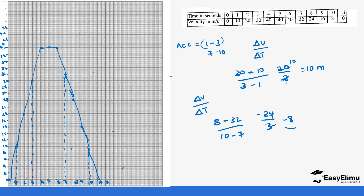The reason we get a negative value is that the velocity is decreasing gradually from forty meters per second downward from minute four onwards. From minute seven it continues going downward, and this is what we call deceleration — which is why the answer comes out as a negative value.